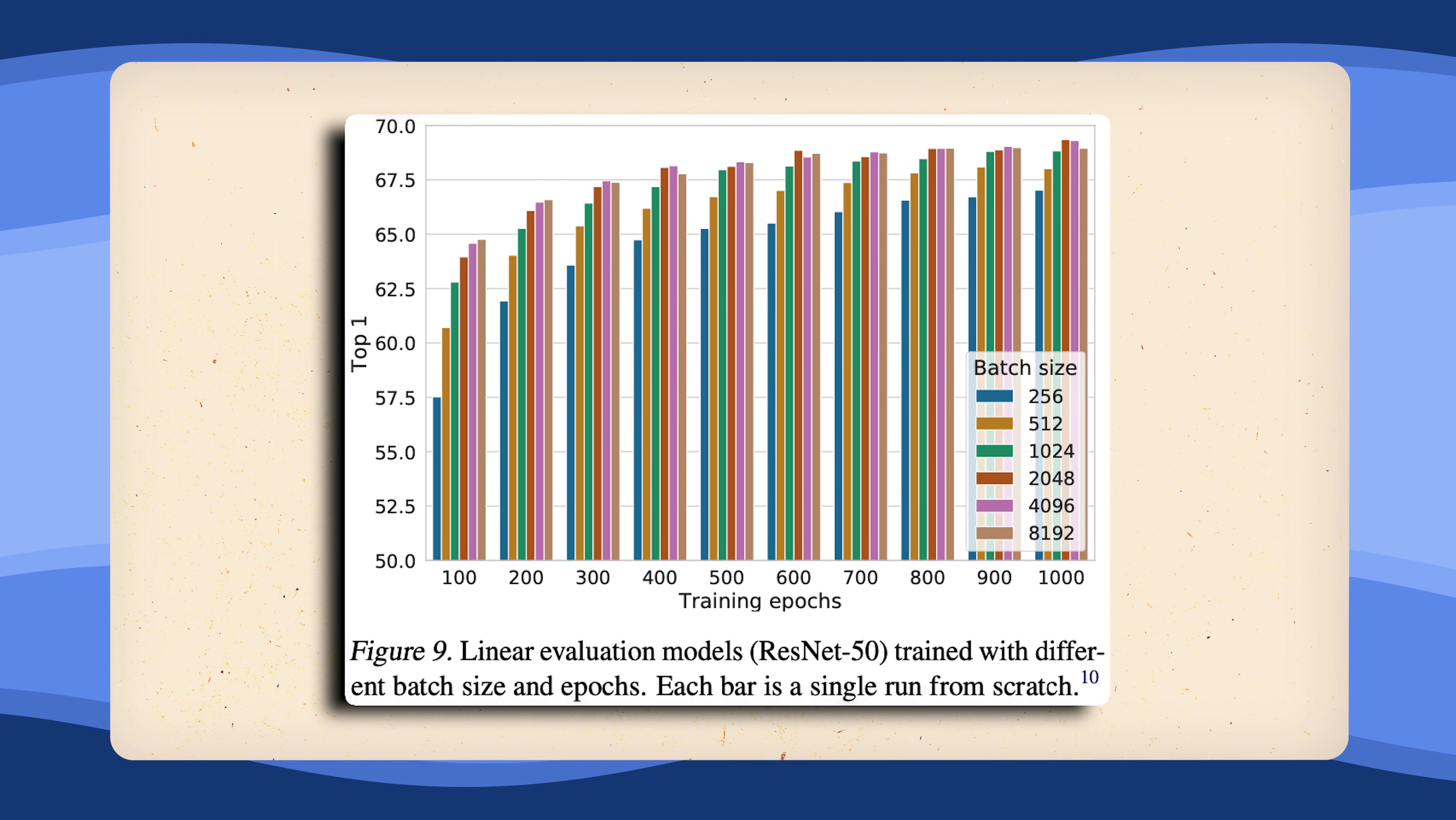If we look at the top one accuracy during training for different batch sizes, we can clearly see that larger batch sizes are crucial, which makes sense, right? The more negative samples we have, the better the model can assess where not to place the embeddings in representation space.